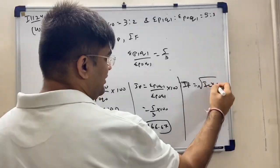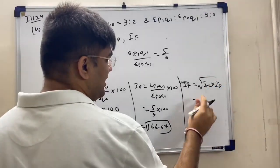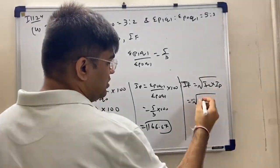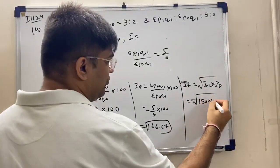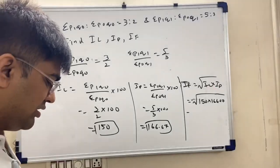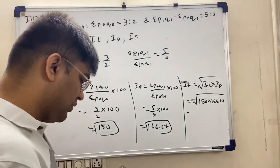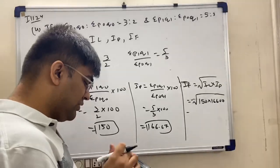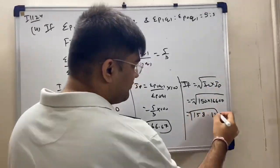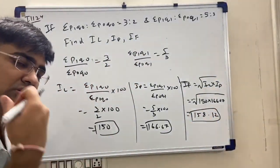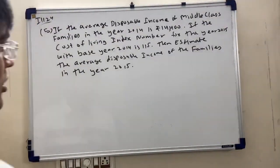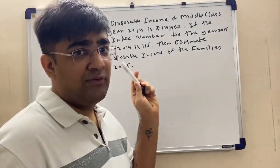Fisher IF equals root of IL into IP equals root of 150 into 166.67, which gives approximately 158. This completes this two-mark sum.